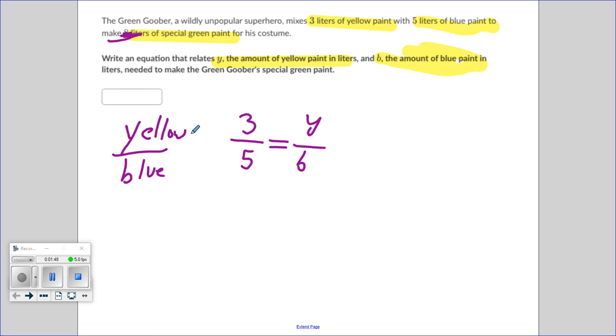Once again, if you take a look, yellow goes with blue, like three goes with five, like Y, yellow, goes with B, blue.